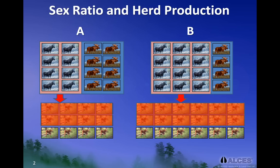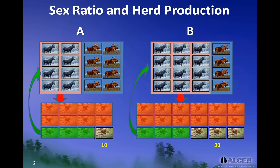If we assume that 2 out of 3 calves do not survive their first year, that leaves 40 calves in population A and 60 calves in population B that can survive to become yearlings. If 30 calves are needed in the population to replace moose that die naturally, that leaves 10 animals available for harvest in population A and 30 moose available for harvest in population B. This simple example shows that populations with a higher proportion of females would likely provide a larger sustainable harvest compared to a population with fewer females.